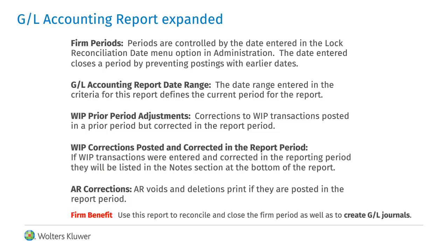Corrections to WIP that have a post date in the current report period, but correct transactions that have a post date in a prior period, are highlighted as a prior period adjustment. With this release, the report calls out prior period WIP corrections and WIP deletions. For WIP, corrections that have been posted and corrected in the current report period are listed in the notes section at the bottom of the report. With this release, there were no new prior period adjustment lines for AR corrections.